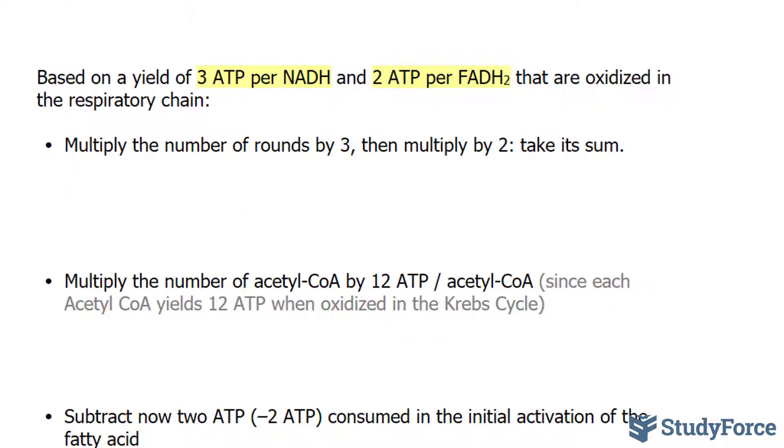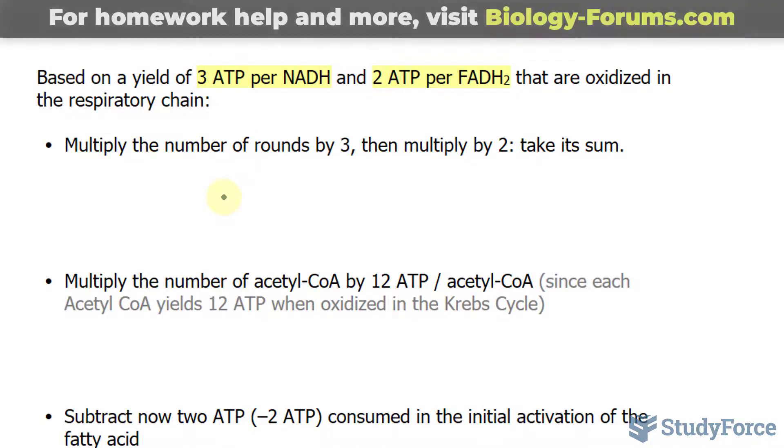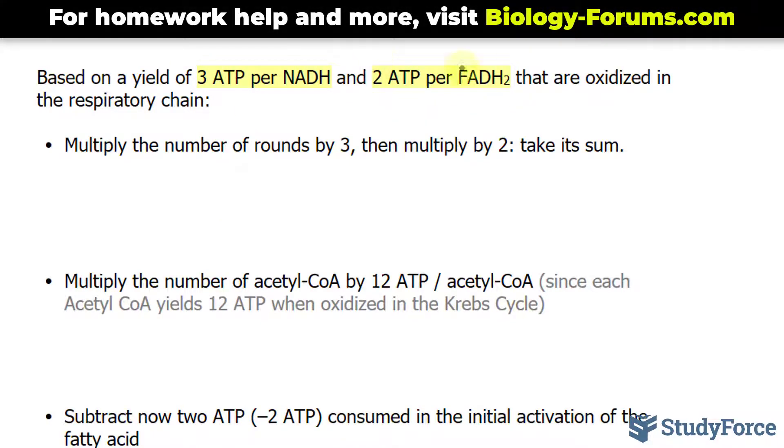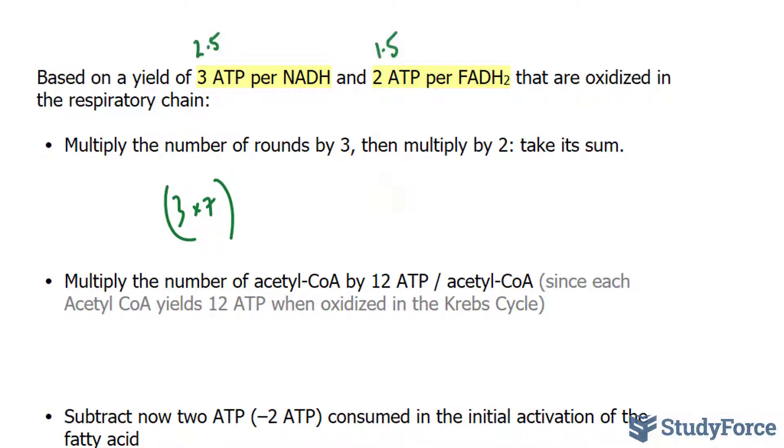Based on the yield of 3 ATP per NADH and 2 ATP per FADH2 that are oxidized in the respiratory chain, we'll multiply this number by the number of rounds. I just wrote 2.5 and 1.5 above the highlighted numbers. The reason why I noted that is because some sources suggest that instead of 3 and 2, it's 2.5 and 1.5 per NADH and FADH2 that enters oxidative phosphorylation.